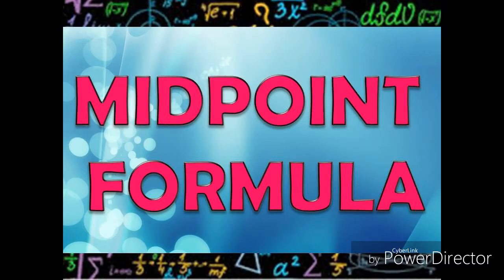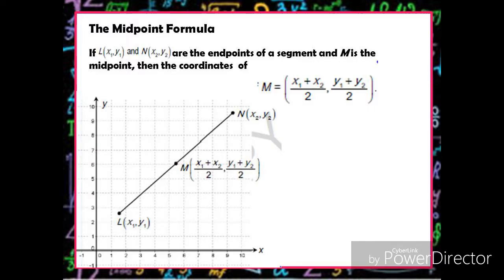This is our lesson for today about the midpoint formula. The midpoint formula: if point L is (X₁, Y₁) and point N is (X₂, Y₂) and are the endpoints of a segment, and M is the midpoint, then the coordinates of M are equal to (X₁ + X₂)/2 and (Y₁ + Y₂)/2.